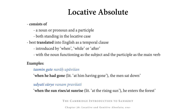The locative absolute is a construction that's perhaps a little unusual. It consists of a noun or pronoun and a participle, and both of these stand in the locative case. They are best translated into English as a temporal clause introduced by 'when,' 'while,' or 'after,' in which the noun or pronoun functions as the subject and the participle functions as the main verb.